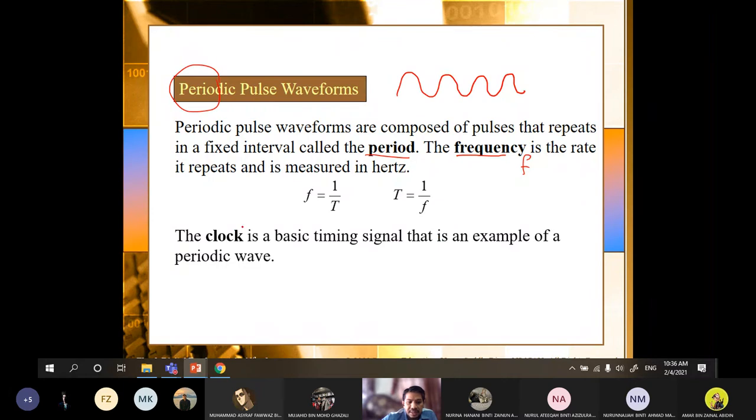So clock is a basic timing signal. So in logic design or digital circuit, we have the term clock. Clock is used for timing signal. So you have to accept that clock is a timing signal, which is an example of a periodic wave. So it is a periodic signal. It looks like a sine wave. So this is the clock waveform. It is periodic.